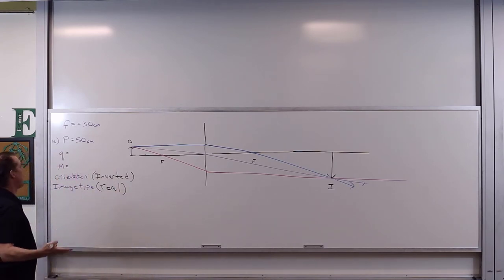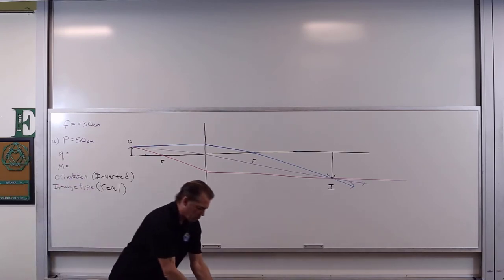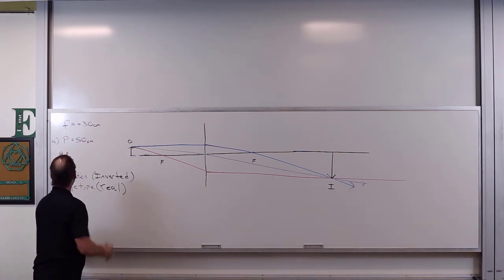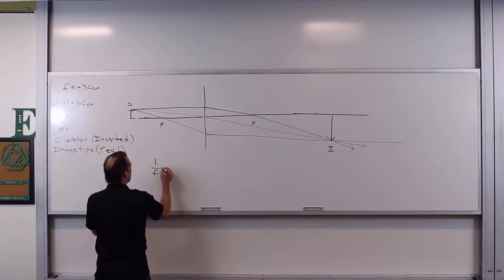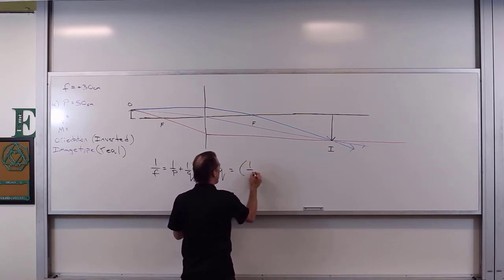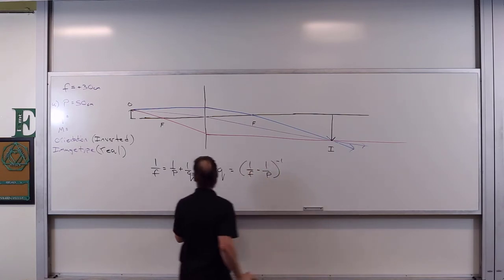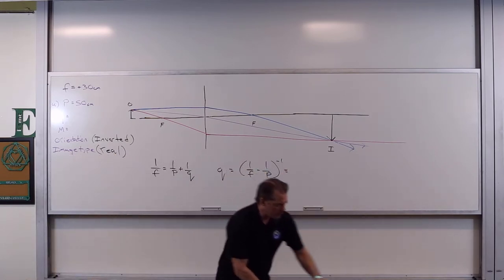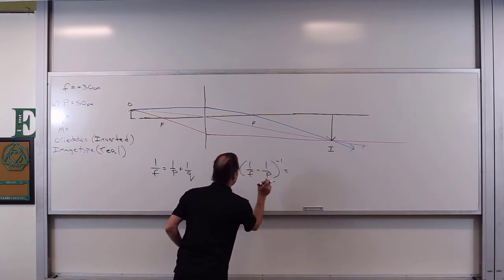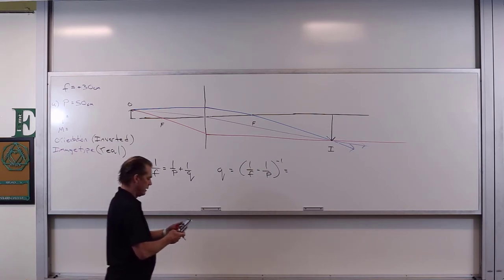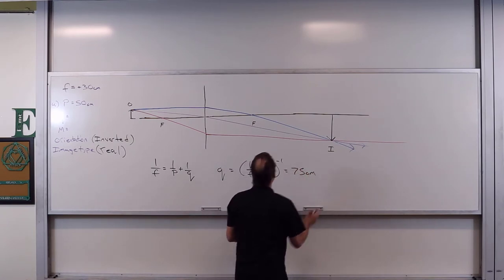So we go ahead and math this out. We want to know what Q is. We've got one over F equals one over P plus one over Q. Q equals the quantity of one over F minus one over P, to the negative one. The focal length is 30 centimeters and the object distance is 50 centimeters. We get one divided by 30 minus one divided by 50, to the negative one — that gives us 75 centimeters.